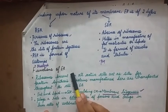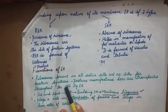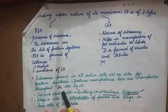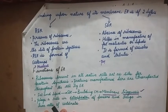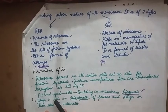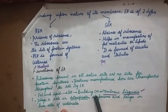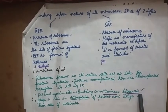Functions of endoplasmic reticulum: Ribosomes present in all active cells act as a site for protein synthesis. Proteins manufactured here are transported throughout the cell by the endoplasmic reticulum. Fats and lipids synthesized by smooth endoplasmic reticulum help in building of the cell membrane — a process known as membrane biogenesis. This is a very important concept.